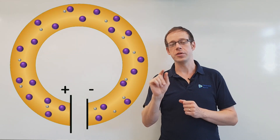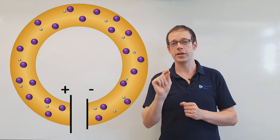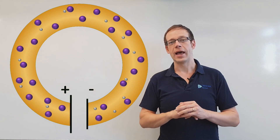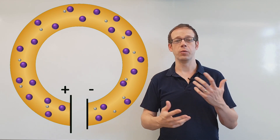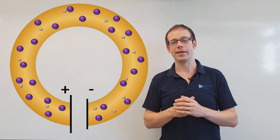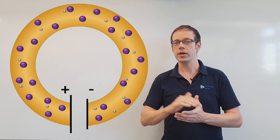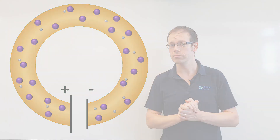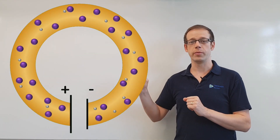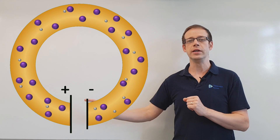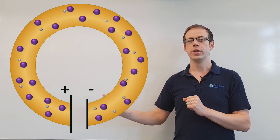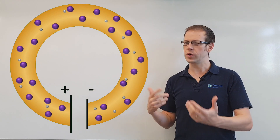Before we answer that question, bear in mind that what we've got connected up is a DC source of electricity, and that means the current is only going to go in one direction around the circuit - it's not going to be alternating like it is in an AC circuit. So which way will the electrons flow? We've got two options: they can either move from the positive terminal to the negative terminal, or from the negative terminal to the positive terminal.